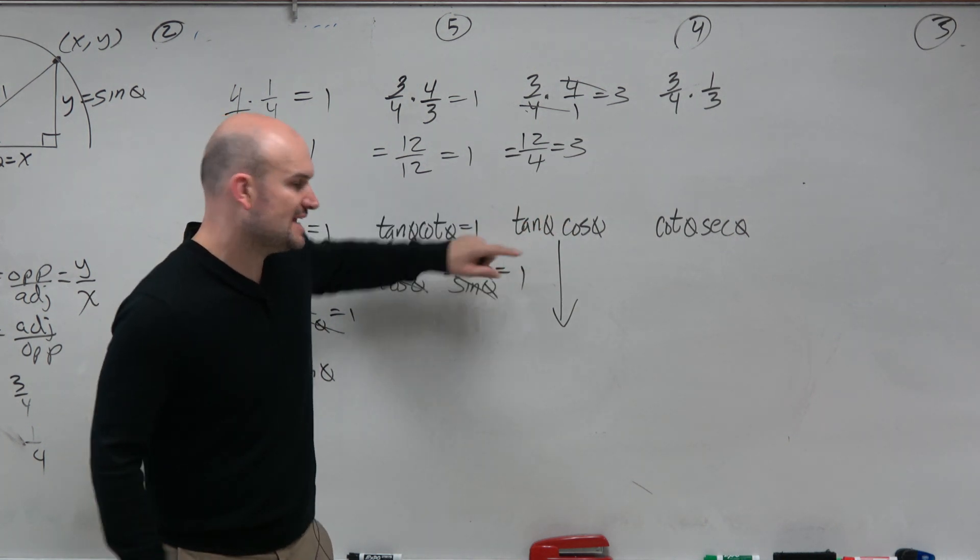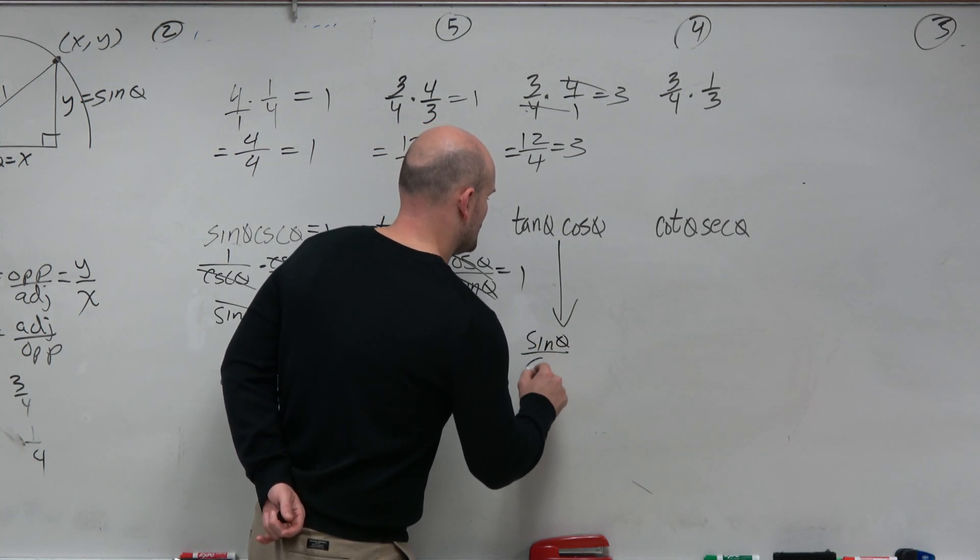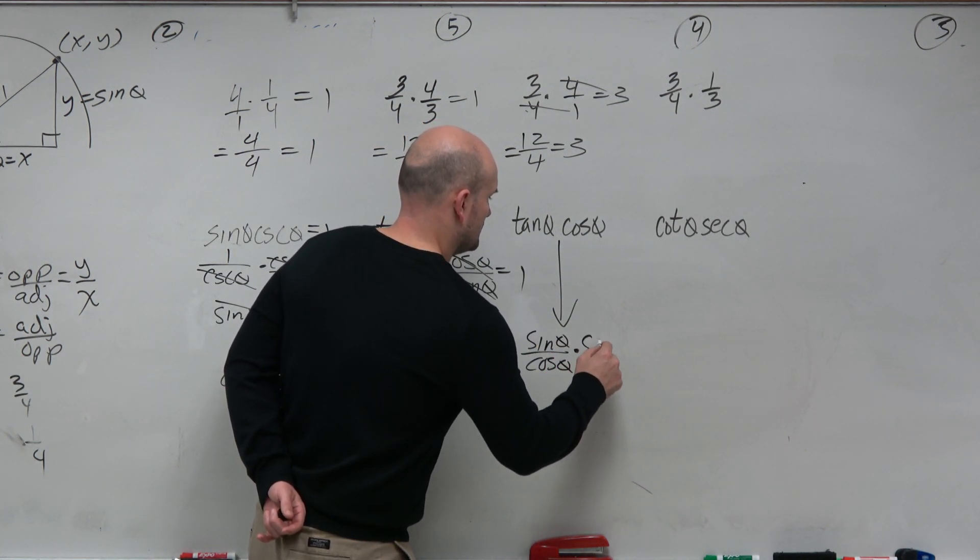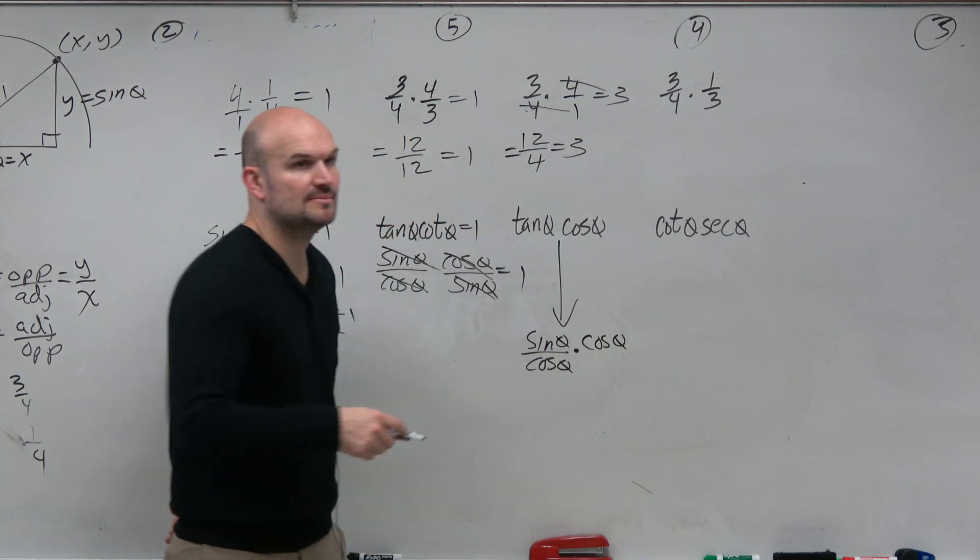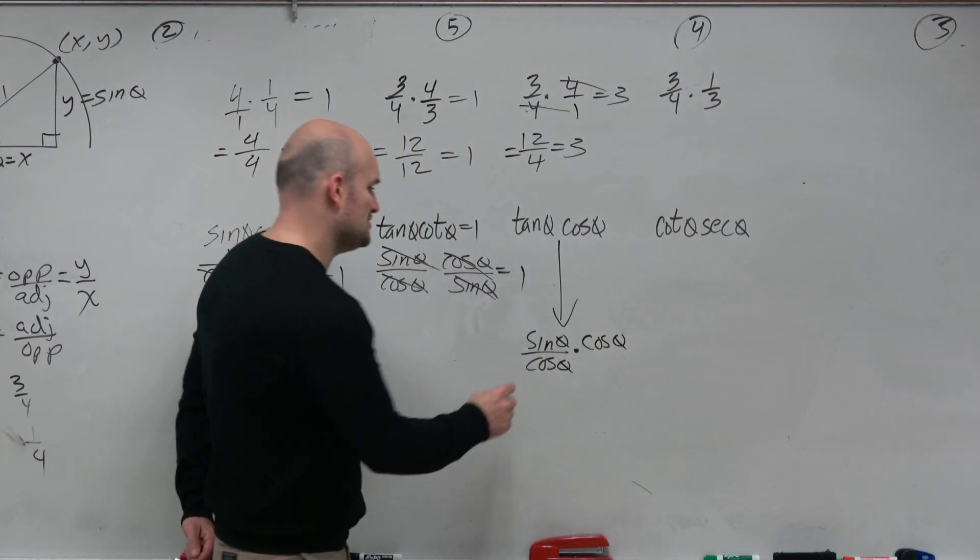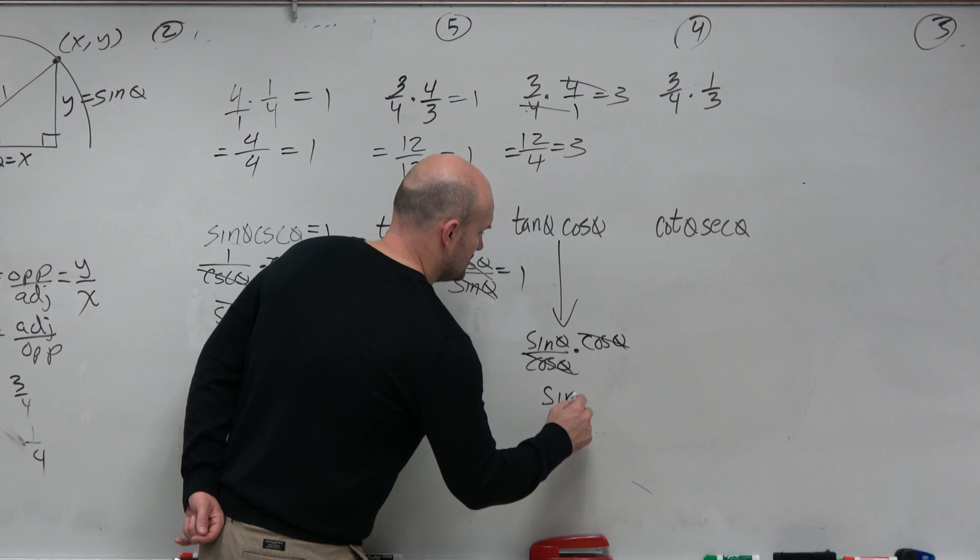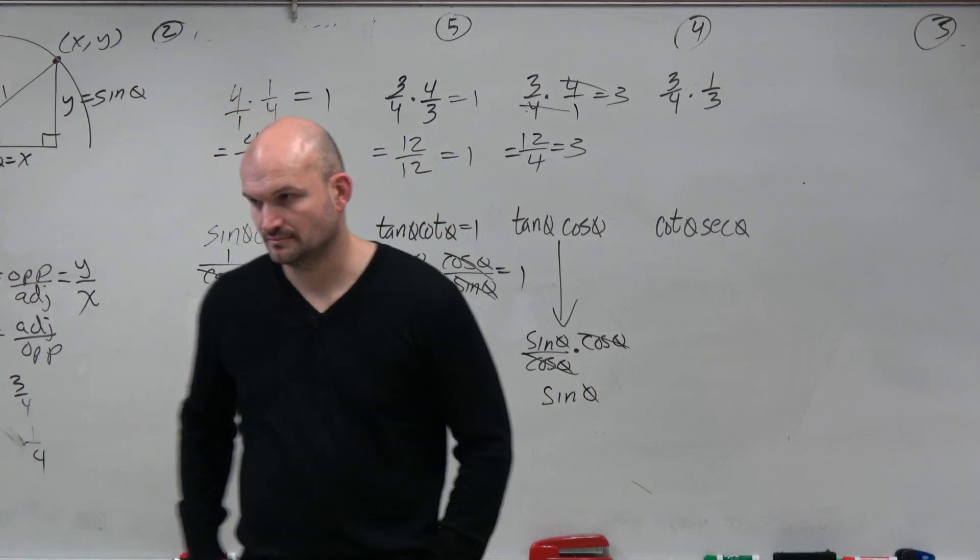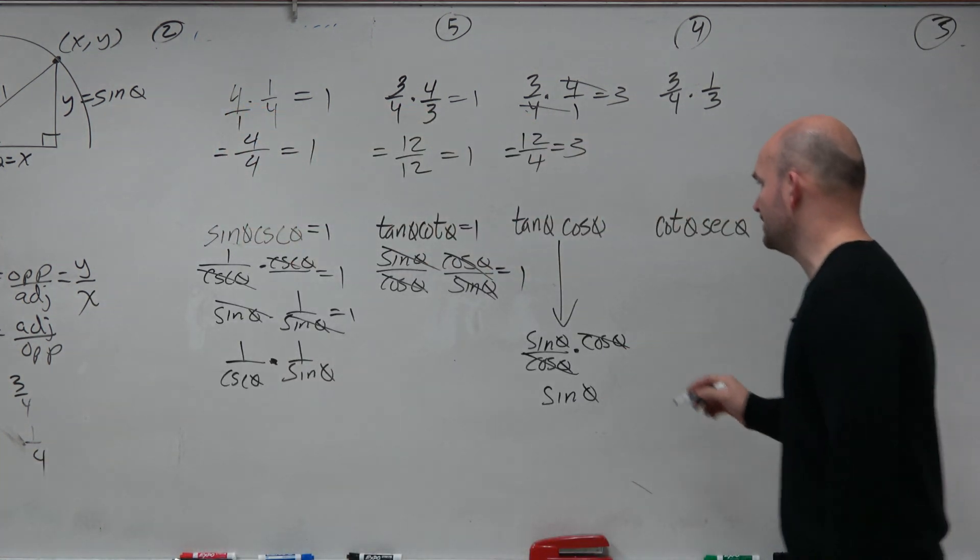But what about if I wrote tangent as sine of theta over cosine of theta? Does now something divide out? Ah, the cosines do. So sine of theta would be the answer.